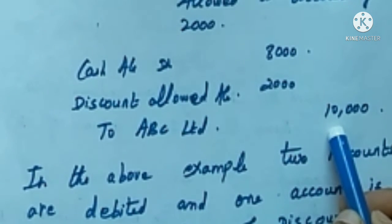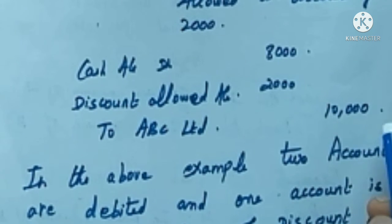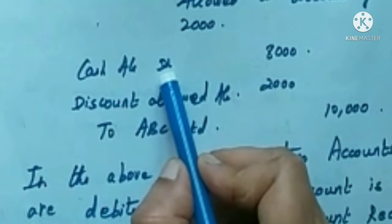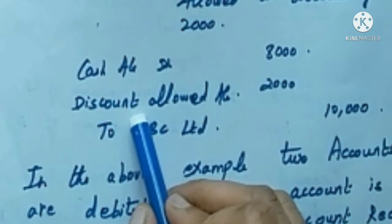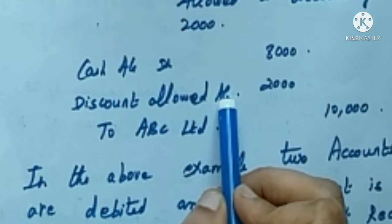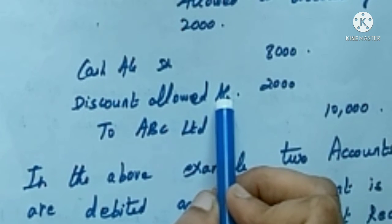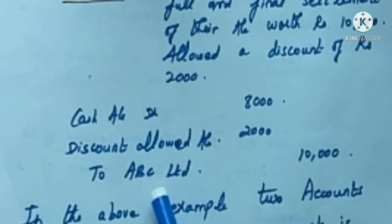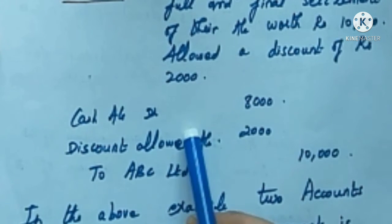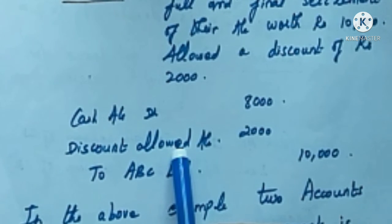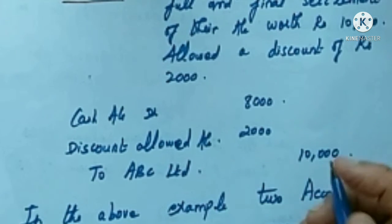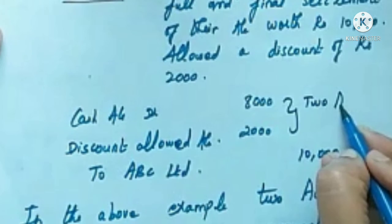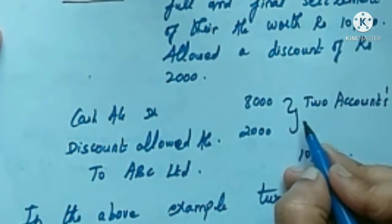We credit ABC Limited with rupees 10,000 because ABC Limited is the giver — credit the giver. Cash account is debited as per the real account rule, discount allowed account is debited because it is an expense for us, but for ABC Limited it is an income. ABC Limited account is credited. This is a compound entry because on the debit side we have two accounts: cash account and discount allowed account.